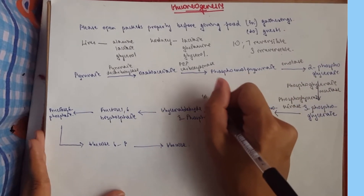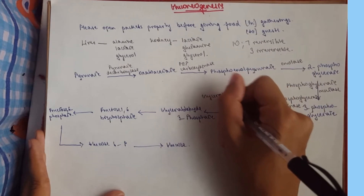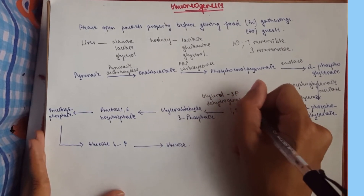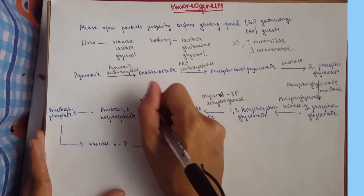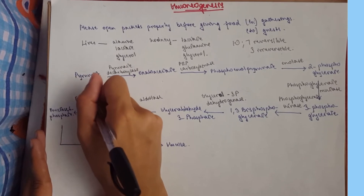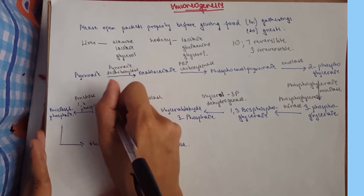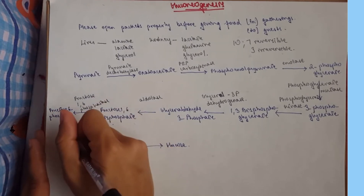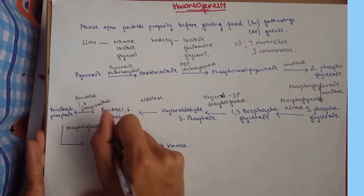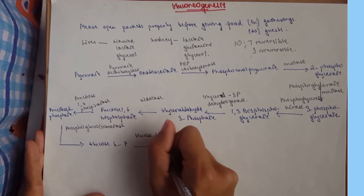Then glyceraldehyde-3-phosphate dehydrogenase catalyzes the next step. After that, aldolase. From fructose-1,6-bisphosphate we have fructose-1,6-phosphatase. From fructose-6-phosphate to glucose-6-phosphate we have phosphoglucoisomerase. And finally, glucose-6-phosphatase converts glucose-6-phosphate to glucose.